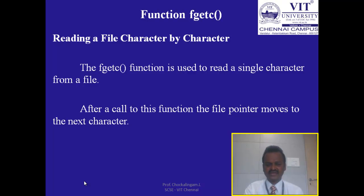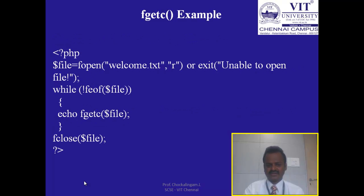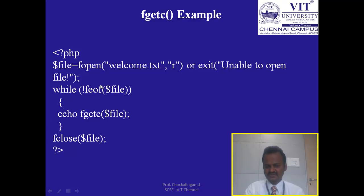The fgetc function reads a single character from a file. After a call to this function, the file pointer moves to the next character. In the example, I open welcome.txt in read mode, check while not feof, and use fgetc to read character by character. Each character is read and displayed, and when the end of file is reached, it exits the loop and closes the file.